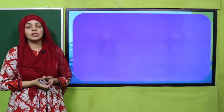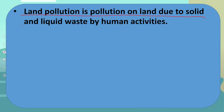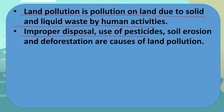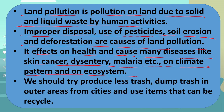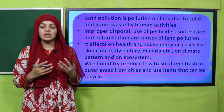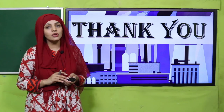Now is the time for wrap-up. The important points from today's lecture are: land pollution is pollution on land due to solid and liquid waste from human activities. Improper disposal, use of pesticides, soil erosion, and deforestation are causes of land pollution. It affects health and causes diseases like skin cancer, dysentery, and malaria. It also affects climate patterns and the ecosystem. We should try to produce less trash, dump trash in outer areas away from cities, and use items that can be recycled.